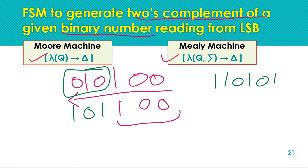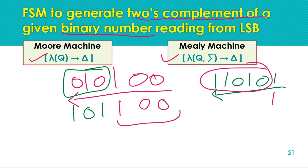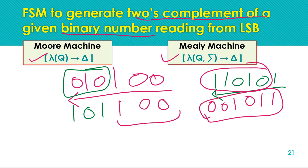Taking another example: 110101. Reading from right to left, the first symbol is already '1', so there are no zeros to copy. We output that first '1' as '1', then complement all remaining bits: 1, 0, 1, 0, 0. So the two's complement of 110101 is 001011. This confirms the shortcut method for generating the two's complement of any binary number.